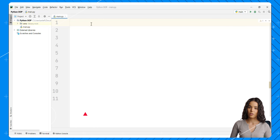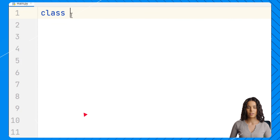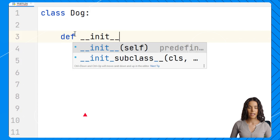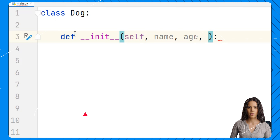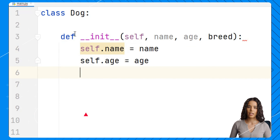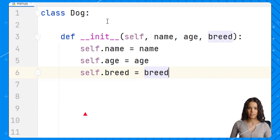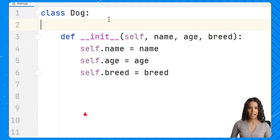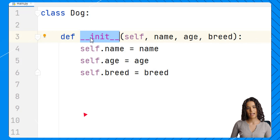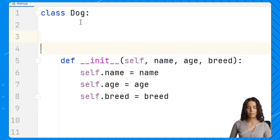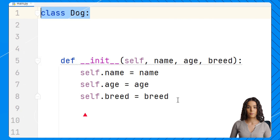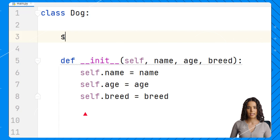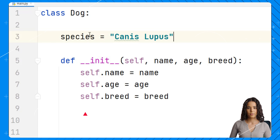Welcome back. In this example, we are going to define a dog class with a species class attribute. Let's write the class header with the class keyword and the name of the class, and define the init method with instance attributes: name, age, and breed. Class attributes are typically defined before the init method. We add a few blank lines between the class header and the init method, and right in the middle we write our class attribute: species equals 'Canis lupus'.